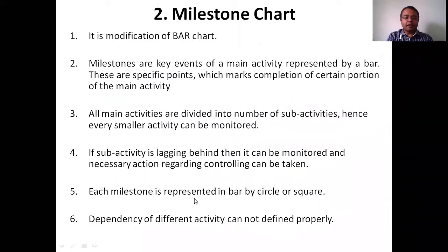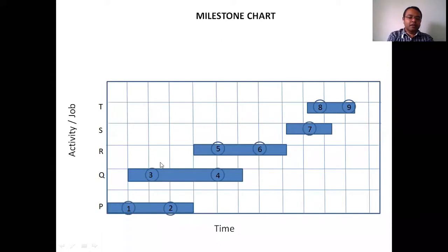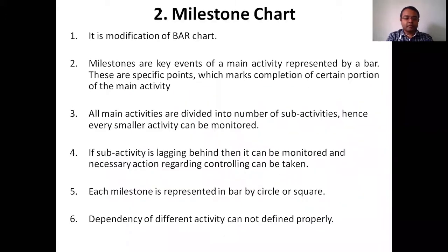Each milestone in the milestone chart is represented by a circle or square on the bar. However, the dependency of different activities still cannot be defined properly — this is the same disadvantage that was present in the bar chart.